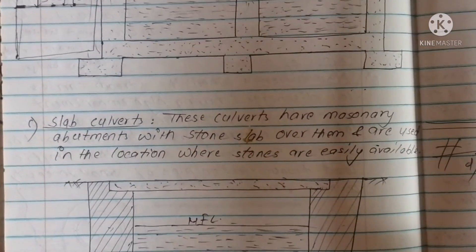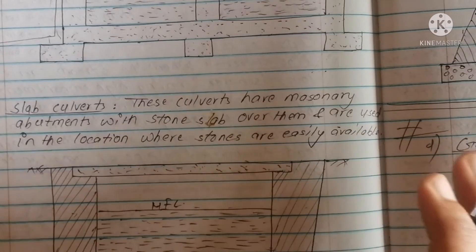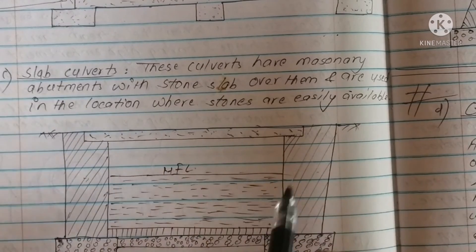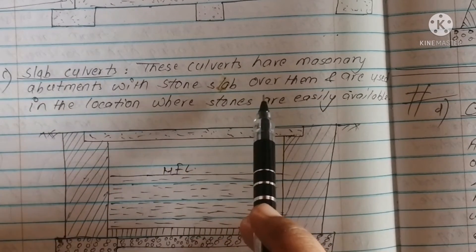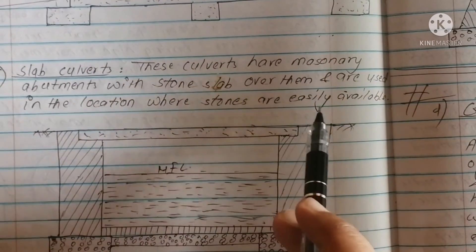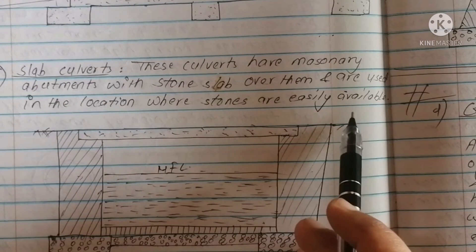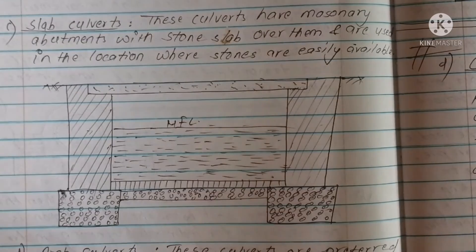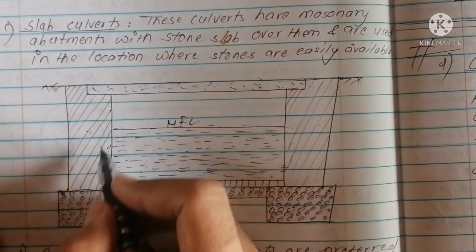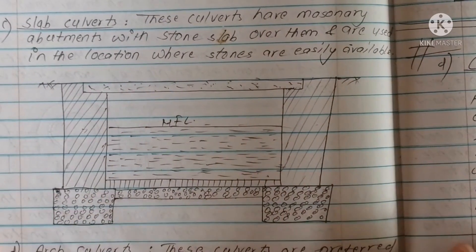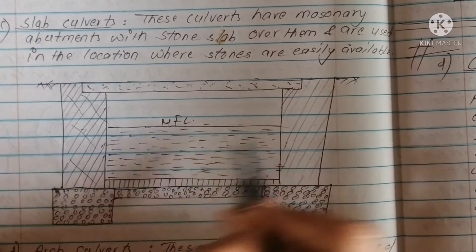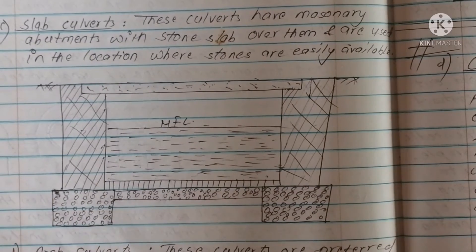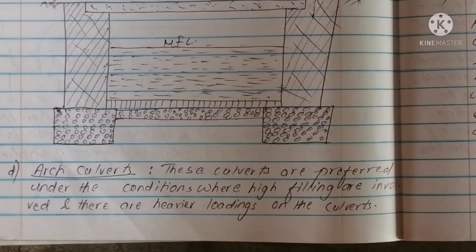We now look at the slab culvert. These culverts have masonry abutments with stone slabs over them, and are used in locations where stones are easily available. The slab culvert is used in such spots. These culverts are preferred under conditions where high fillings are involved and there are heavier loadings on the culvert.